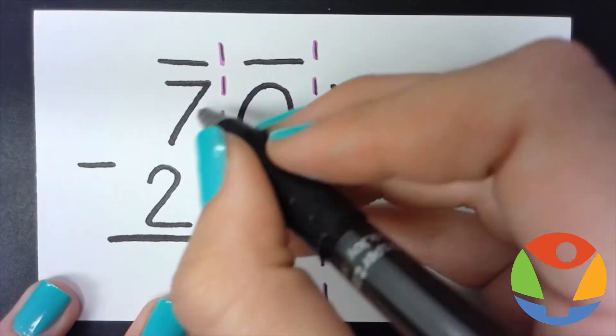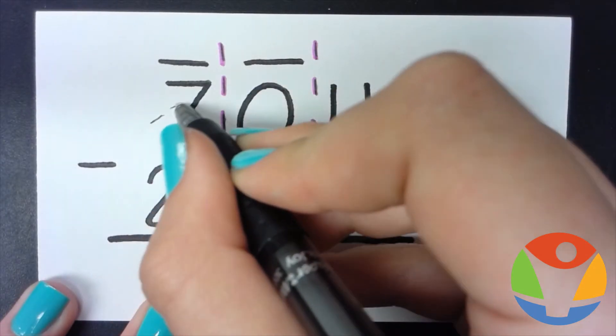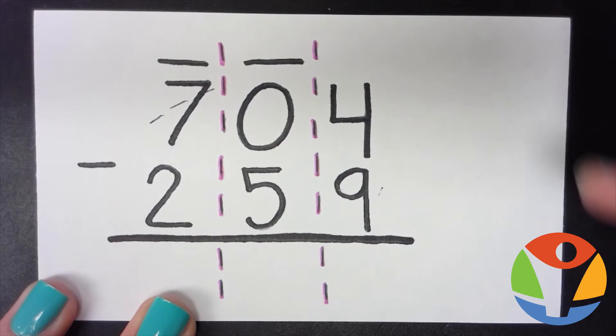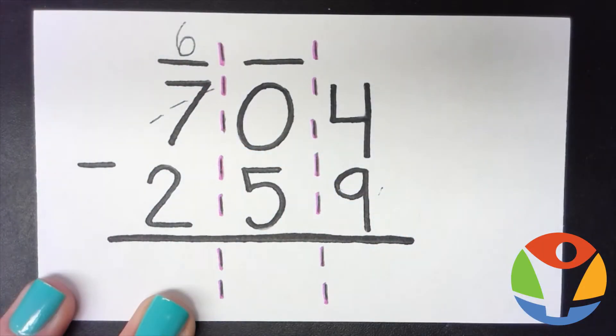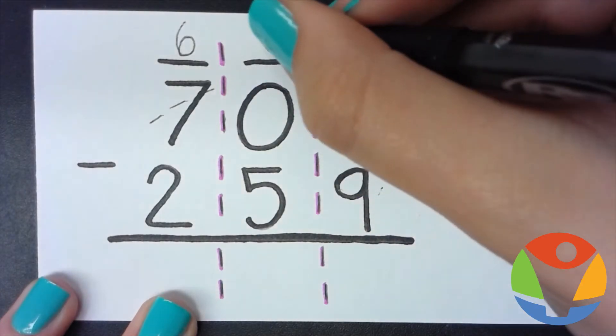We have to make that zero a ten first. So we're going to cross out the seven, and that's going to become six. And now this zero is ten.